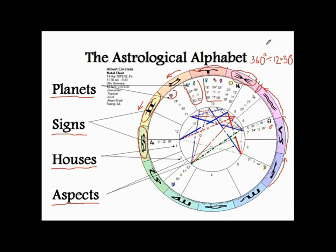Have you ever wondered why there are 360 degrees in a circle and not some other number? The 360 degrees in a circle are related to the fact that there are almost 360 days in a year. The sun's movement is very connected to this degree division in a circle. This is why the sun will move 1 degree per day.